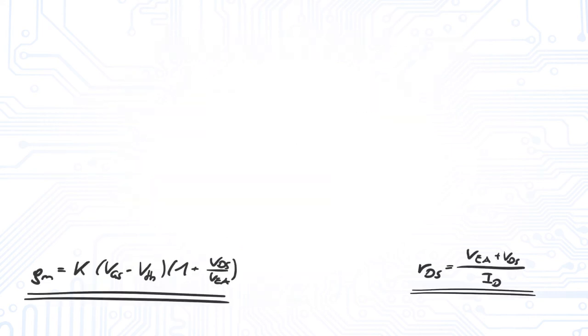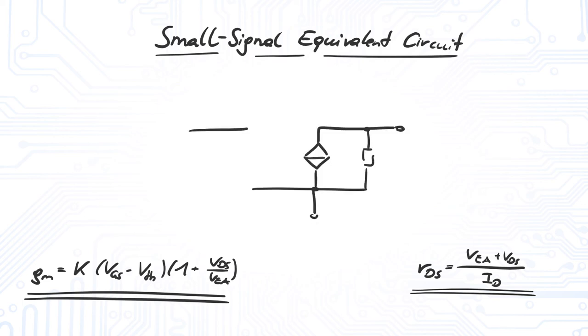All these different small signal parameters form the small signal equivalent circuit. For our circuit analysis, we simply replace the actual transistor with the equivalent circuit and apply methods like the superposition principle as usual.